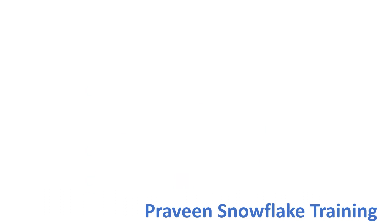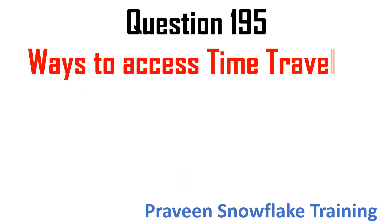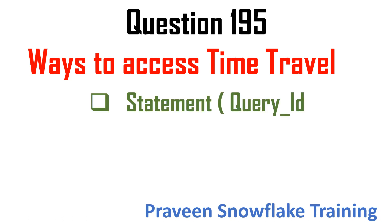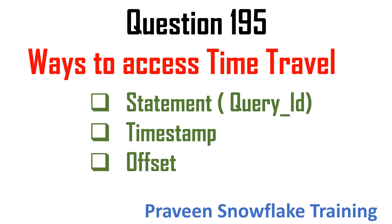Question 195: Ways to access time travel. Time travel is about accessing historical data that has been modified, deleted, updated, or dropped for any database object. There are three ways to access time travel: by using a statement with query ID, by using a timestamp, or by using an offset.